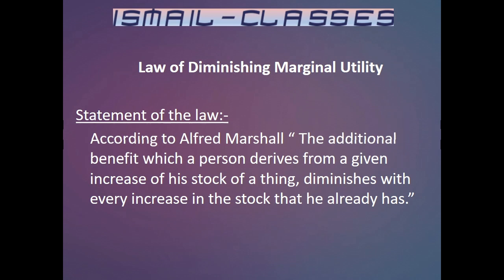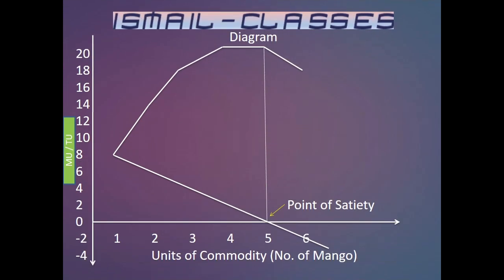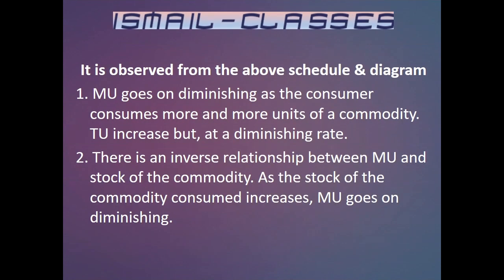Utility schedule: below is the table showing the units of commodity and their total and marginal utility. Below is the diagram showing the point of satiety. It is observed from the above schedule and diagram that: first, marginal utility goes on diminishing as the consumer consumes more and more units of a commodity.